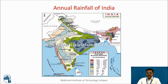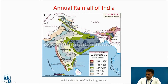This is the annual rainfall pattern over India. We observe that heavy rainfall takes place in the Konkan region. Heavy rainfall also takes place in the eastern states of India. Whereas very low rainfall takes place in Rajasthan. Low rainfall also takes place in some parts of Gujarat, some parts of Maharashtra, Karnataka, Tamil Nadu, and so on.